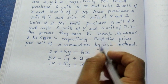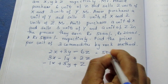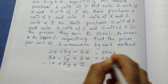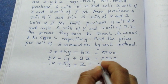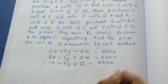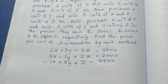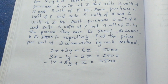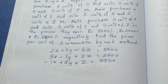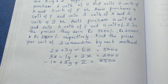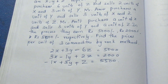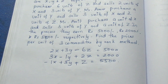In this process they earn respectively: the first one earns 5,000, the second one earns 2,000, and the third one earns 5,500. We need to find the price per unit of the 3 commodities — find the value of X, Y, and Z, where each represents the price per unit.